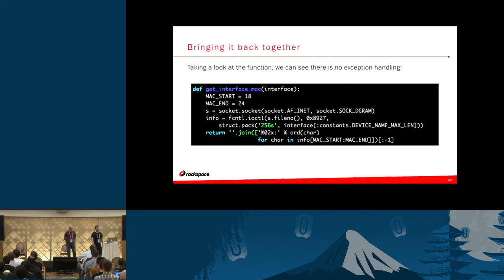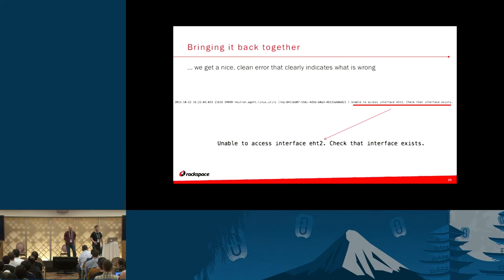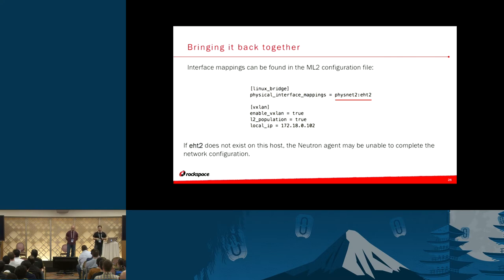We dove into the code and you can see it's pretty basic. We noticed there's no error trapping there, so we went ahead and added some exception handling — literally three lines — and restarted the Linux bridge agent to see what it would log. By adding that exception handling we can now see that it's complaining about interface 'eht2,' so we both looked at it and said that's dead simple — someone fat-fingered the interface name. The Linux bridge agent doesn't know what that device is and can't do anything with it.